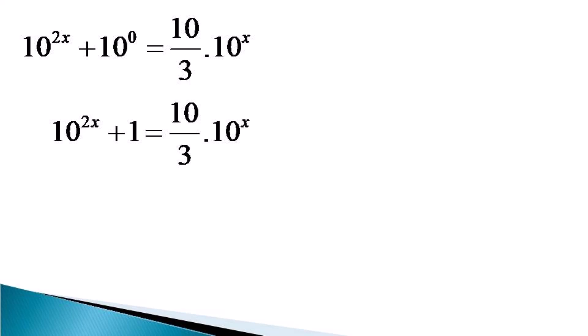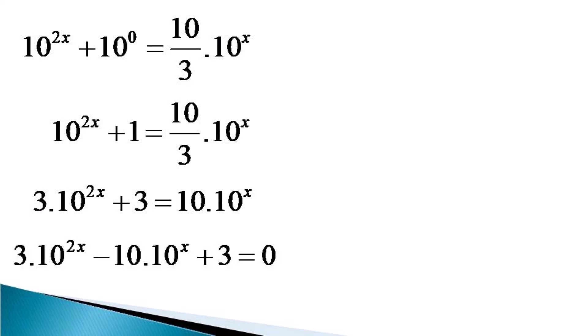So cross multiplying, we get the equation as 3 into 10 raised to the power 2x plus 3 is equal to 10 into 10 raised to the power x. Making the right hand side equal to 0 by bringing the term to the left hand side, we get 3 into 10 raised to the power 2x minus 10 into 10 raised to the power x plus 3 is equal to 0.